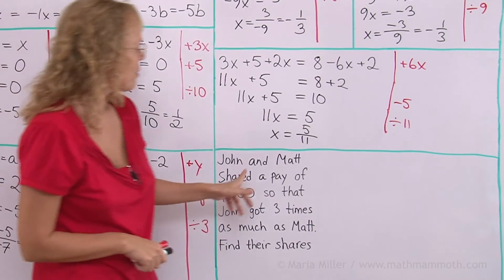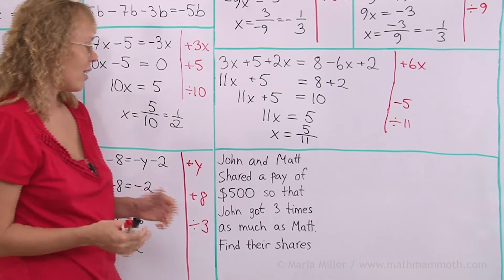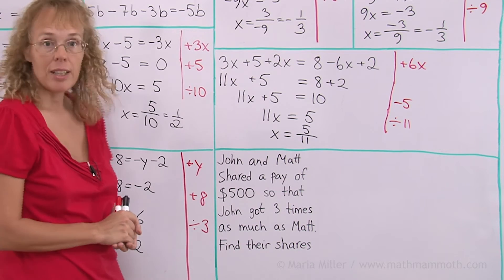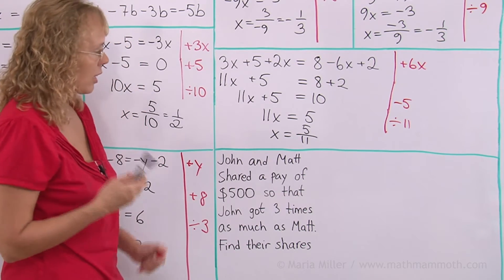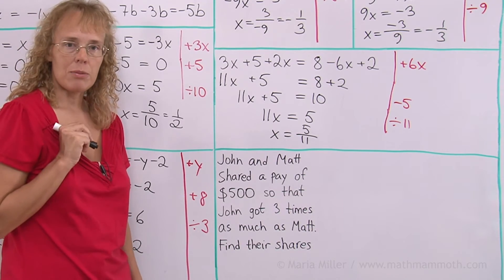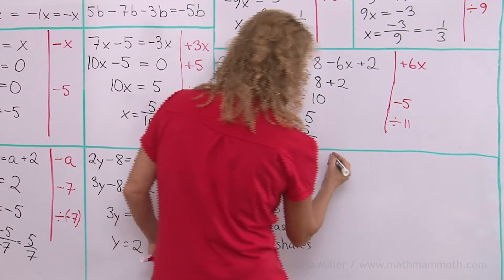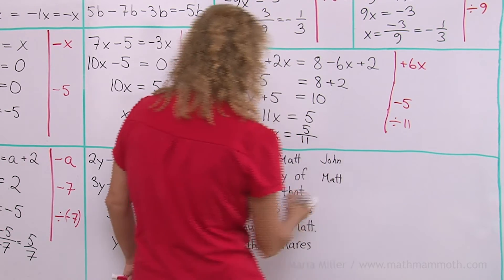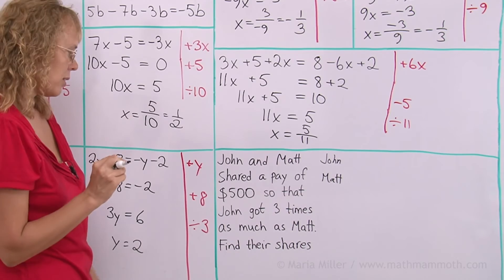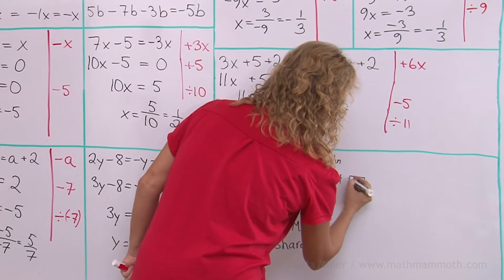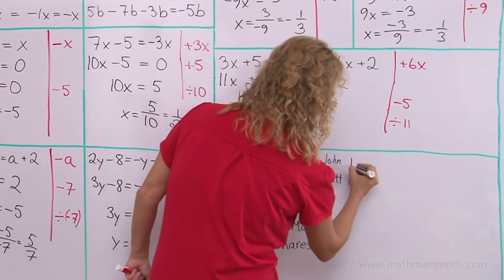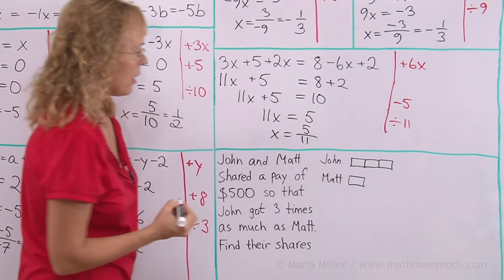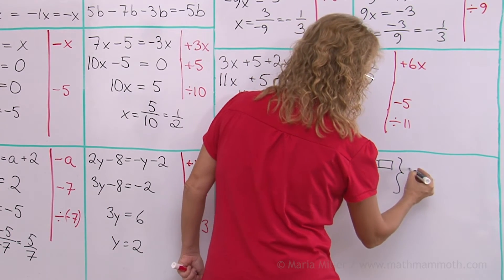Lastly we do one word problem. John and Matt shared a pay of $500, so that John got three times as much as Matt. Find their shares. And I'm going to start out by drawing a bar diagram for you. Let's say that John gets something and Matt gets something. John gets three times as much as Matt. So let's say Matt gets this much and John would get three blocks, so to speak.